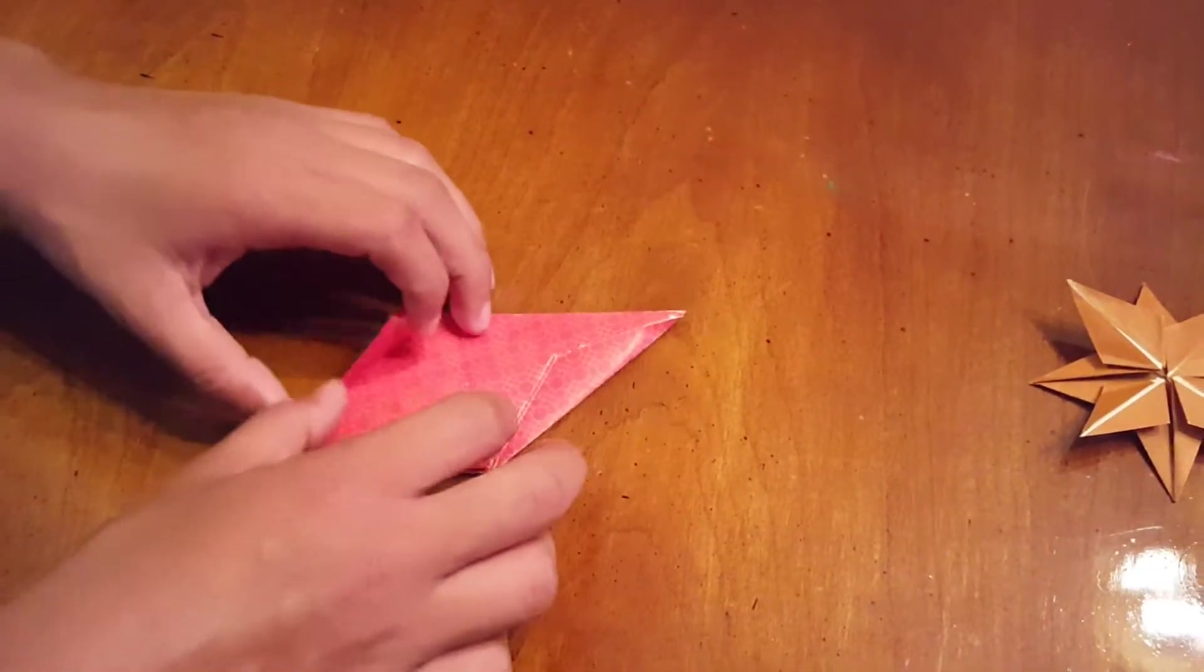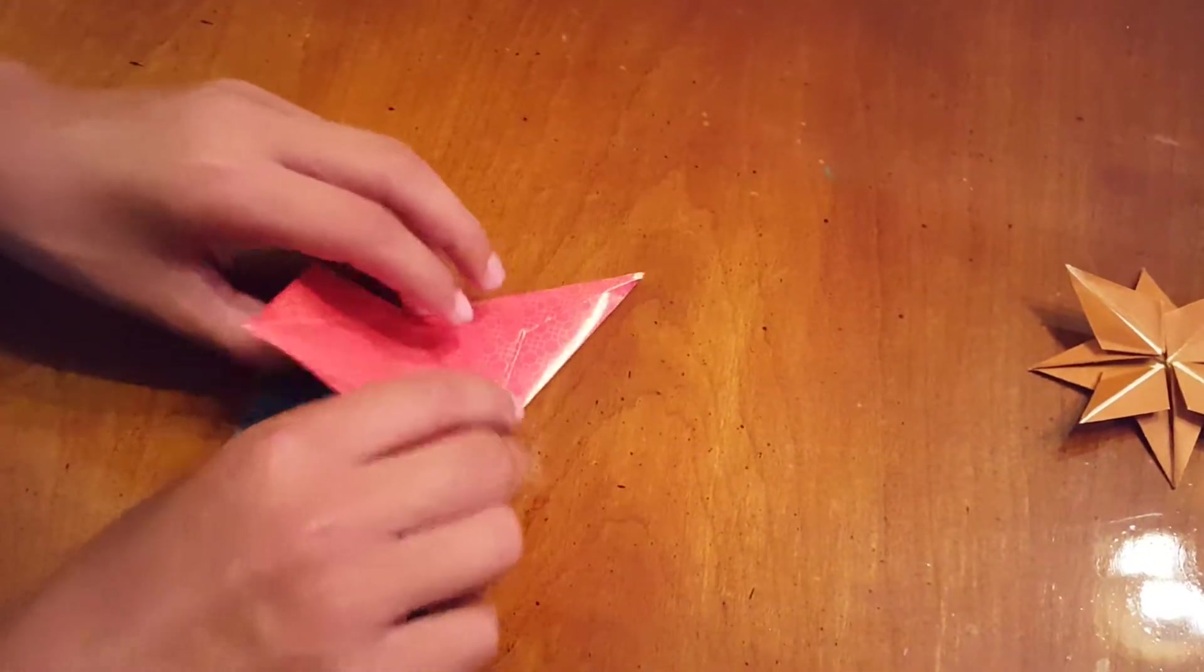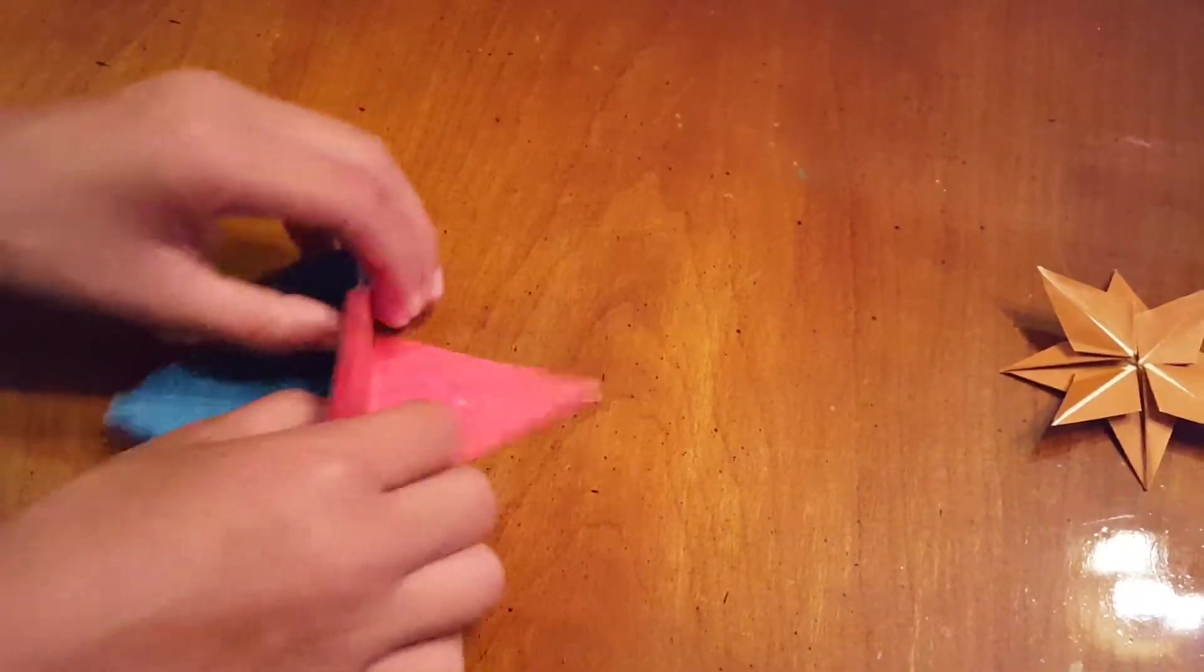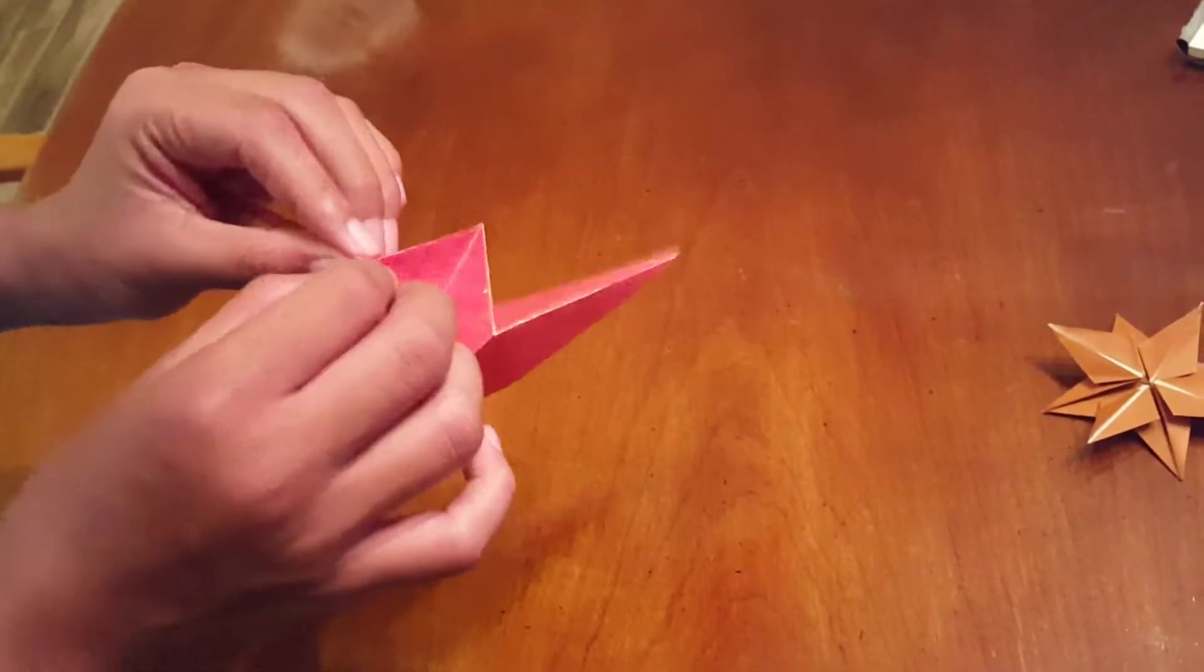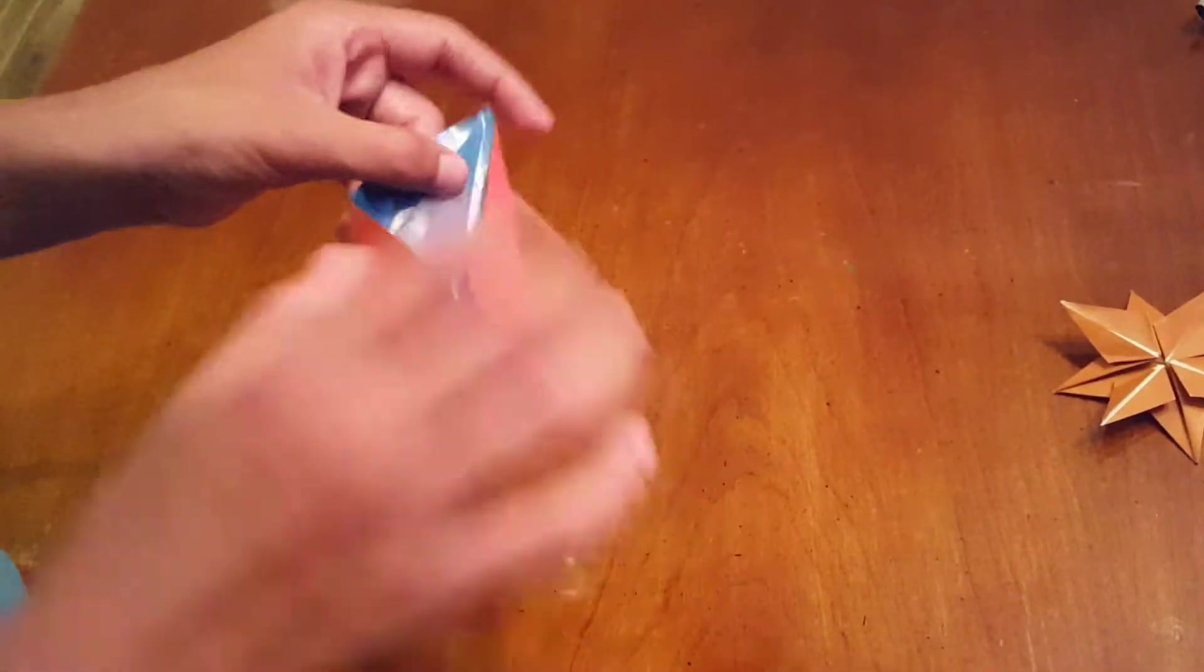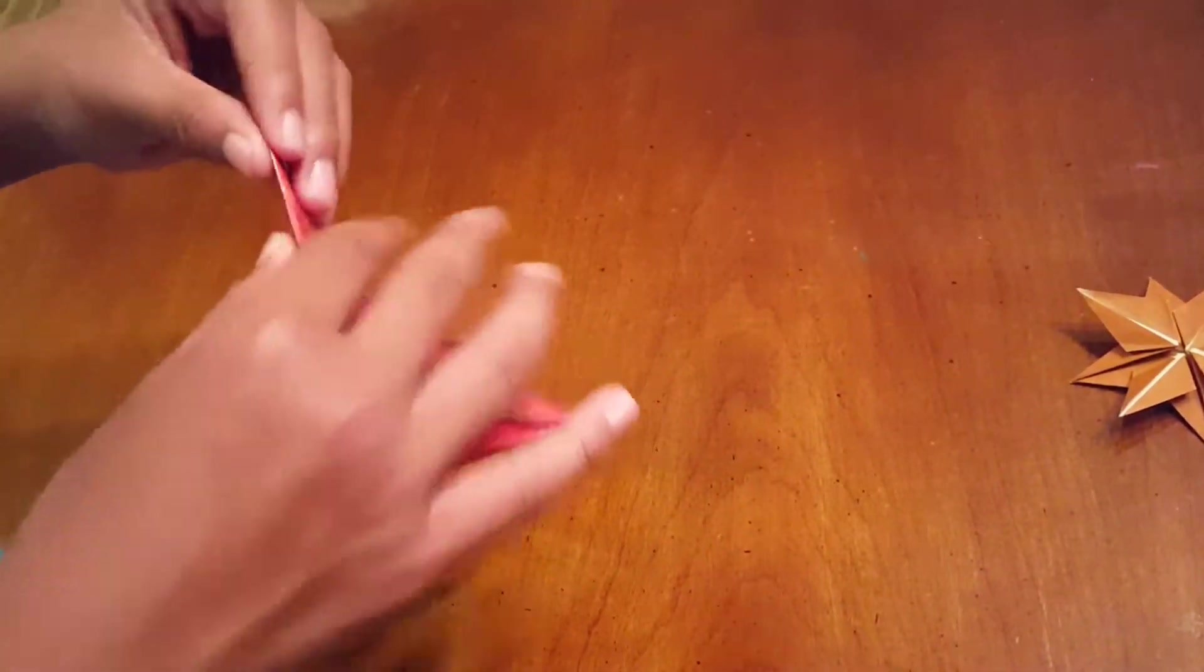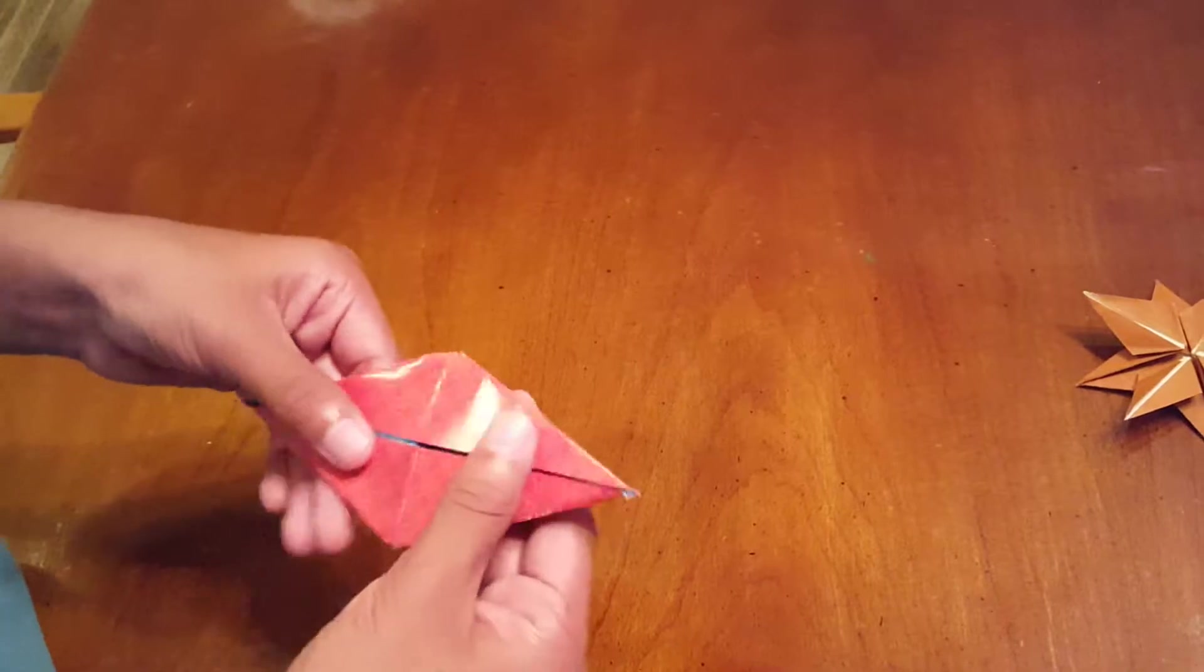Do the same on the back side. Unfold this. Fold this along this crease here. Change these valleys into mountains, and obviously this is a mountain here. And then like this.